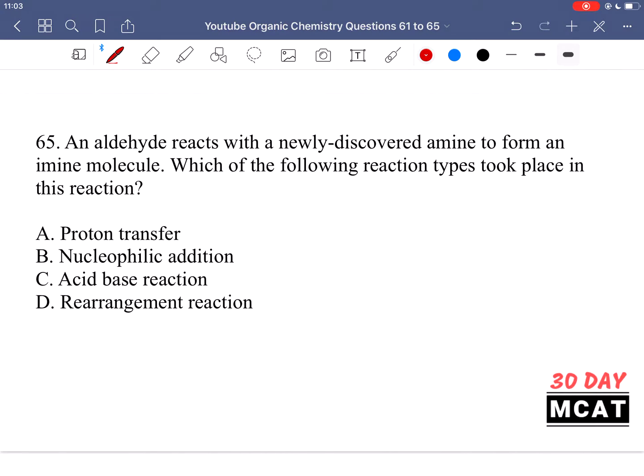In question 65, it says an aldehyde reacts with a newly discovered amine to form an imine molecule. Which of the following types of reaction took place in this reaction? So aldehyde reacted with an amine and we got an imine. So an aldehyde looks like this. We reacted it with some amine, one, two, three, that gave us this compound. This is what an imine would look like, where the oxygen is replaced with the nitrogen.